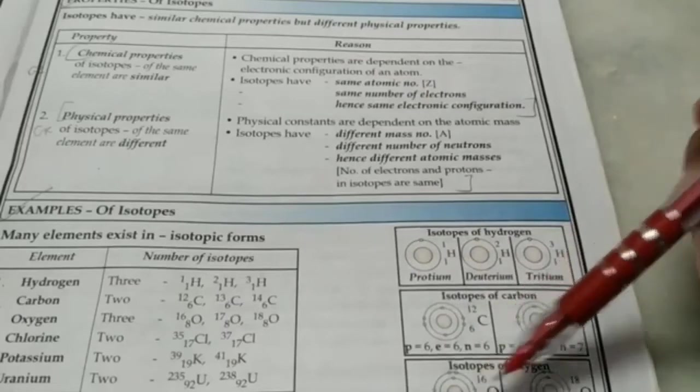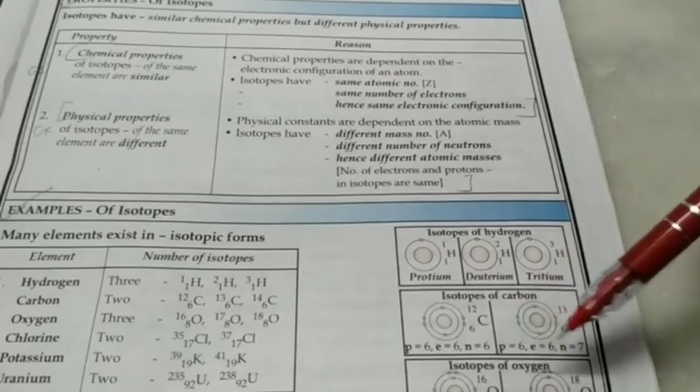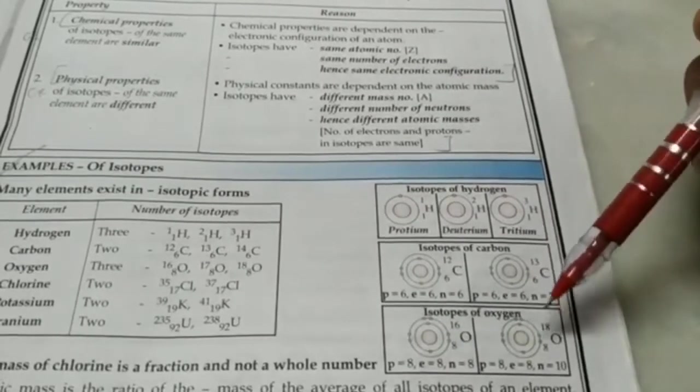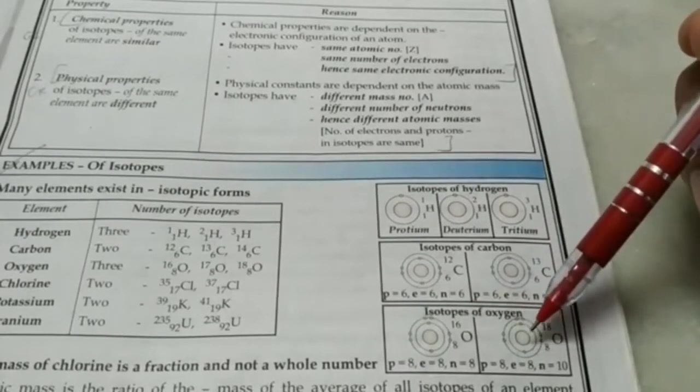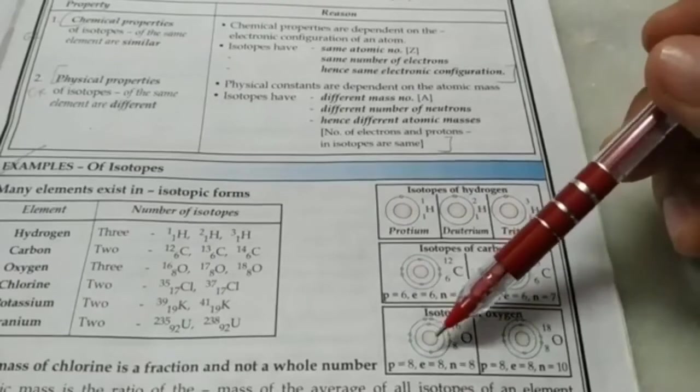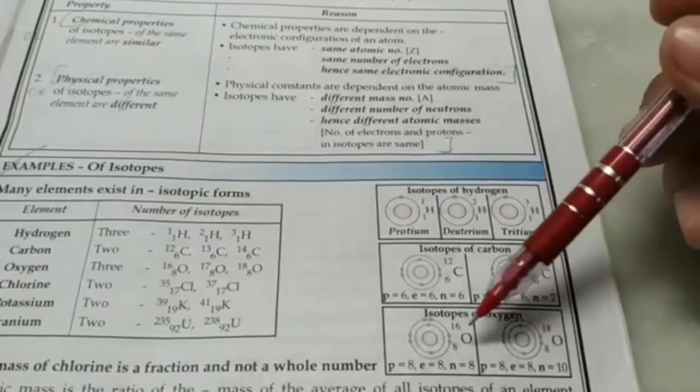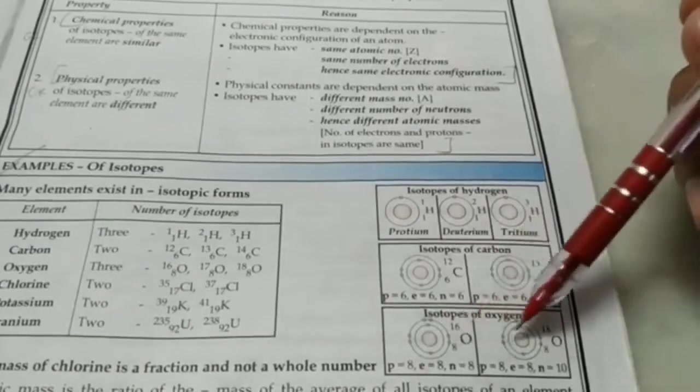But the physical properties may be different. Since oxygen 18 is a little heavier than oxygen 16, there will be a difference in their boiling point, melting point, a slight difference. But electronic configuration is the same. It's 2, 6 here and 2, 6 here. Valency is also 2 and valency here also is 2. So the chemical properties are the same.